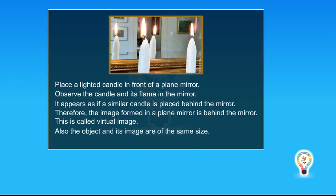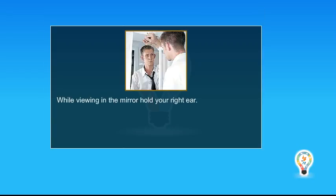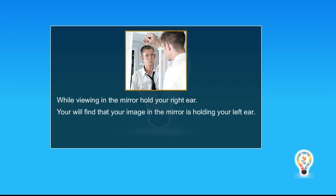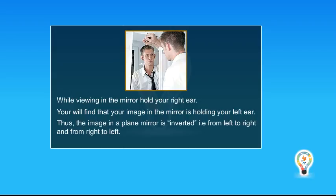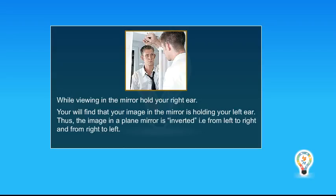Also, the object and its image are of the same size. Thus, the image formed in a plane mirror is virtual and erect. While viewing in the mirror, hold your right ear. You will find that your image in the mirror is holding your left ear. Thus, the image in a plane mirror is inverted.